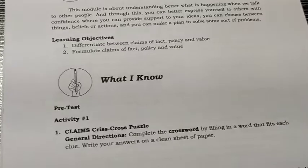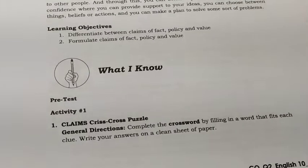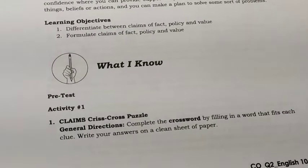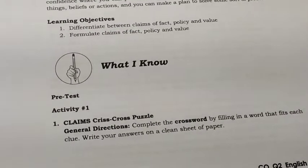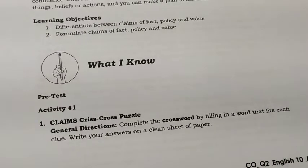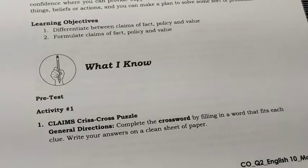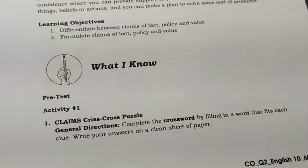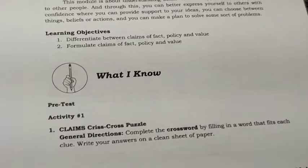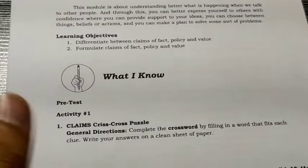For the 'What I Know' part, the pre-test, Activity number 1 is the Claims Crisscross Puzzle. Complete the crossword by filling in a word that fits each clue. Write your answers on a clean sheet of paper.